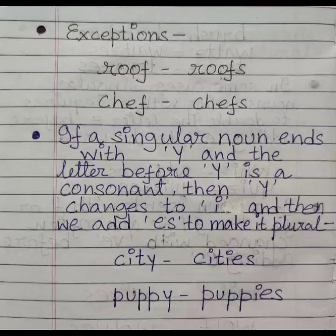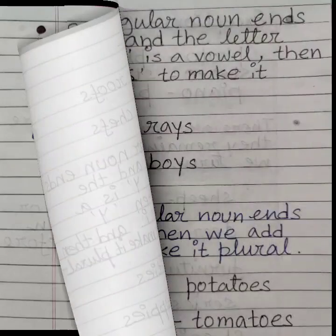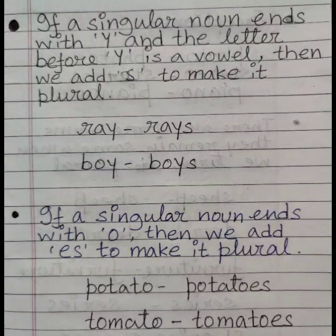Next, if a singular noun ends with Y and the letter before Y is a consonant, then Y changes to I and we add ES to make it plural. If a singular noun ends with Y and the letter before Y is a vowel, then we add S to make it plural. Example: ray → rays, boy → boys.